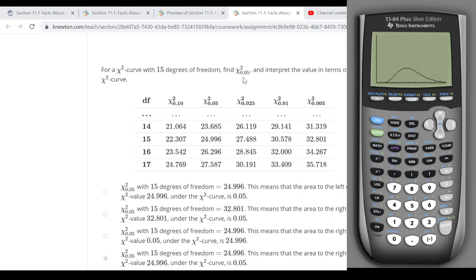Now that's from this table I can find it. Do 15 degrees of freedom, so I'm in this row with 15 degrees of freedom here. And I'm looking for chi-square with the subscript of 0.05, so 24.996.